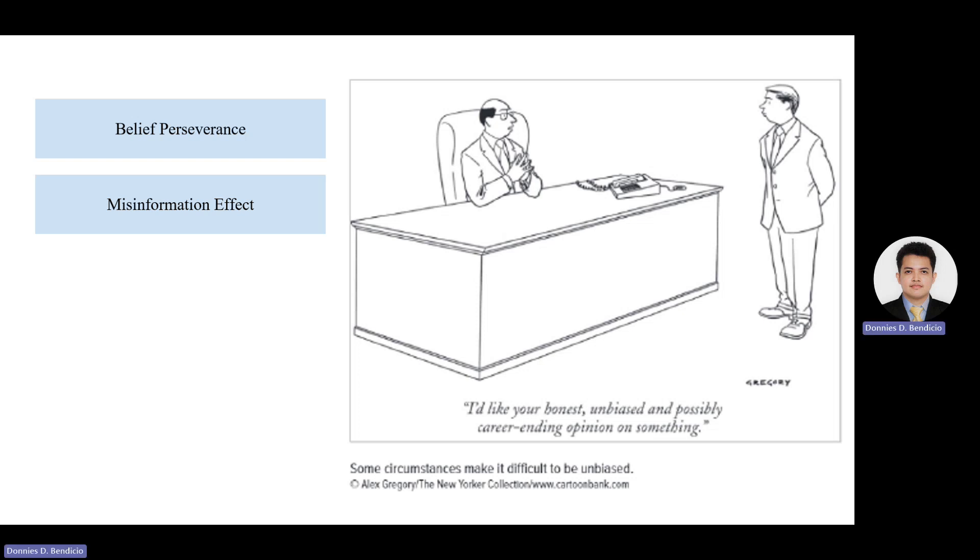Future research in social psychology might investigate the factors that make individuals more susceptible to the misinformation effect, such as cognitive processes or individual differences. Additionally, researchers could develop interventions to counteract the impact of misinformation and enhance the accuracy of social judgments, particularly in areas like criminal justice and public opinion formation.